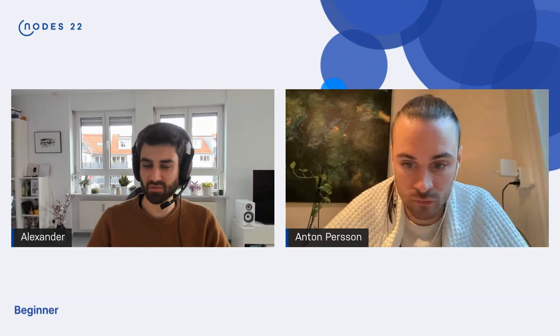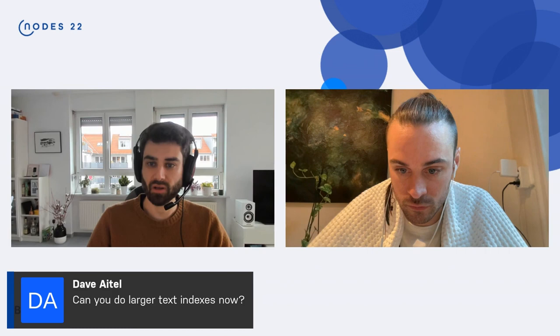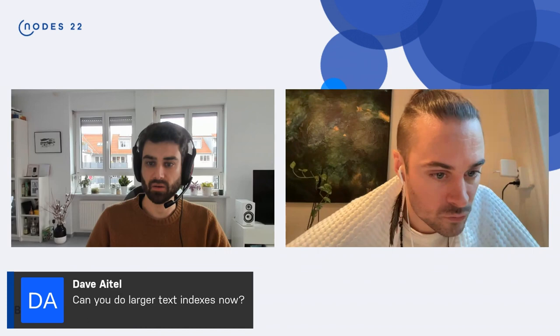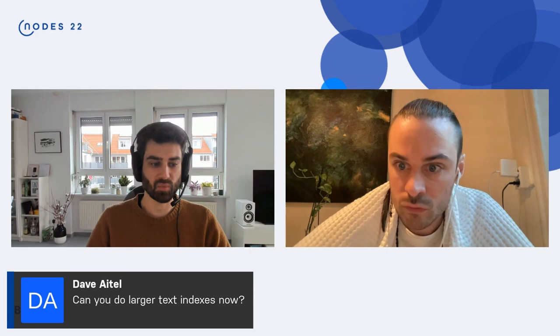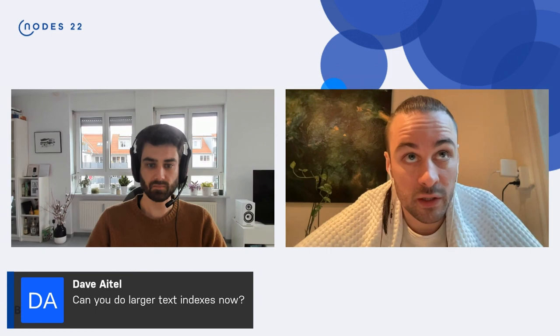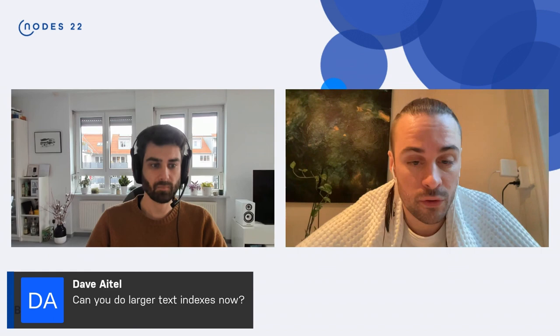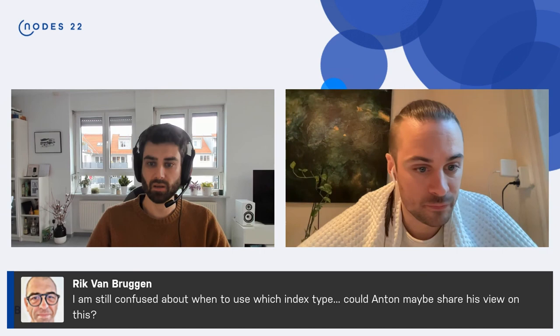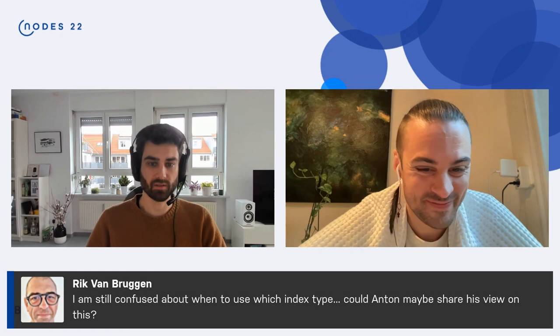Hey Anton, that was great. Thank you very much. We have a few minutes left, so I think we can take a question or two. One from Dave from earlier about the size or a larger index. Can you do large indexes now instead of just 23,000? Is has that limit been changed? Do you know? Hmm. So the limit in 4.4, the limit is 32 K if I remember correctly. And that limit is the same in Neo4j 5.